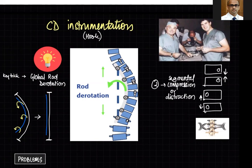Hook instrumentation also allowed segmental compression and distraction. Previously, Harrington instrumentation only allowed distraction at the ends. CD instrumentation allowed compression or distraction between two hooks placed very close to each other — that was a new method of correction added by this era.